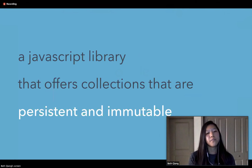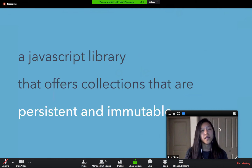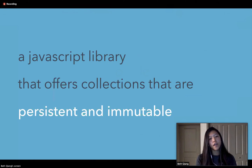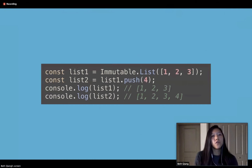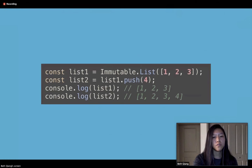Immutable JS is a JavaScript library that offers collections that are persistent and immutable. Persistent in the sense that even though the API is mutative — meaning you can change an element in an array — every time you call that API method, it will leave the original unchanged and return a new collection. Immutable in the sense that once you've created a data structure, you can never change it. An immutable List is basically equivalent to a JavaScript array, so you can push, pop, etc. However, unlike with a JavaScript array, the original list remains unchanged when you push a value — it actually returns a new list stored in a new variable.